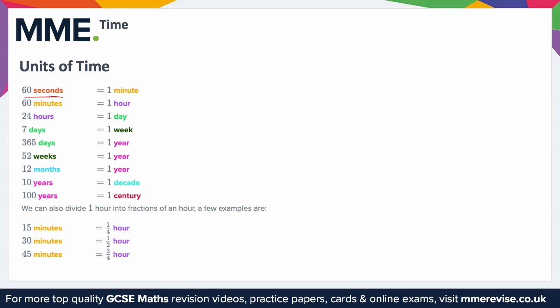So there are 60 seconds in one minute, and then we can carry this on: 60 minutes in an hour, 24 hours in a day, 7 days in a week, 365 days in a year, 52 weeks is also a year, 12 months is also a year. Then we can also have groups of years: 10 years is a decade, 100 years is a century, and so on.